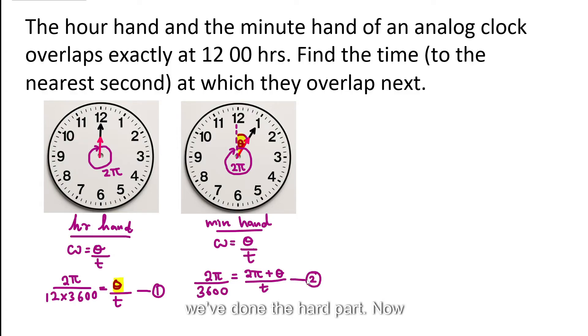We've done the hard part now. Now, all we need to do is solve one and two simultaneously and find the value of theta and then use that to get to the time. So let's do that. Now, to simultaneously solve it, I'm going to make t the subject from this one. And I'm going to make t the subject from this one. And I'm going to just equate both of them.